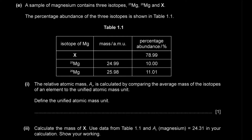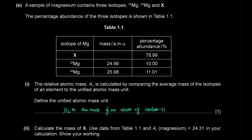A sample of magnesium contains three isotopes: Mg-25, Mg-26, and X, with percentage abundances shown in Table 1.1. The relative atomic mass is calculated by comparing the average mass of isotopes to the unified atomic mass unit, which is defined as 1/12 the mass of an atom of carbon-12.